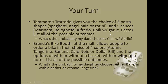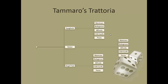So some problems that I can have you do. Go ahead and pause the video here and see if you can go through these particular ones. Tammaro's Trattoria gives you the choice of three pasta shapes and five sauces. So how many possible outcomes could you get? And then linking back what's the probability my date chooses chili with garlic?